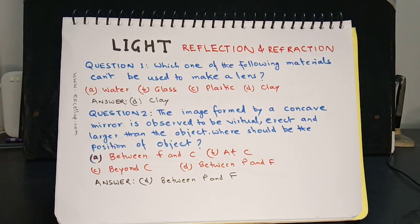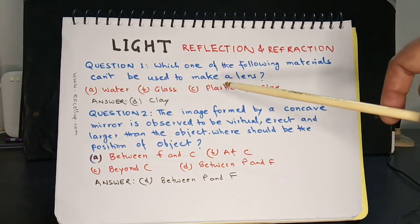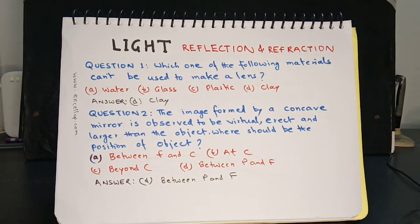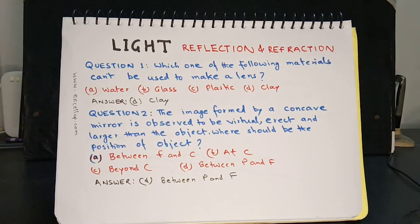Question 1: Which of the following materials cannot be used to make a lens? Options are: a) water, b) glass, c) plastic, and d) clay. The answer is clay, because clay is the only opaque material in this selection. Glass and water are transparent, and plastic can be made transparent, so lenses can be made from those three materials but not from clay.